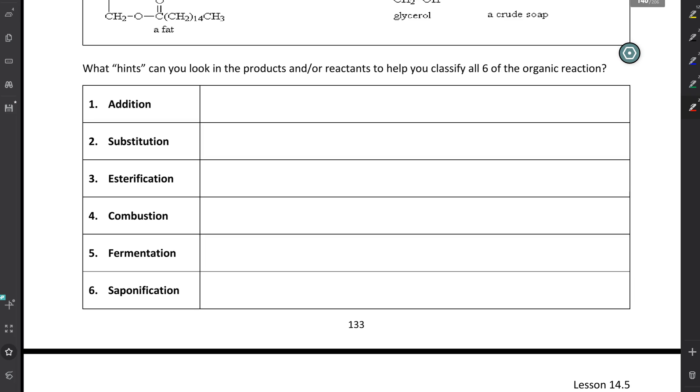I'd like to finish up today's lesson just kind of by recapping the six different reaction types that we learned. We talked about addition, substitution, and esterification in the screencast 14.4. And then today we looked at combustion, fermentation, and saponification. One thing that proves to be hard for new chemists to do is classify reactions. So what I'd like you to do is pause the video and think about it for a couple of minutes. What type of hints or clues can you look at for in the products or the reactants to help you classify all six of the organic reactions?